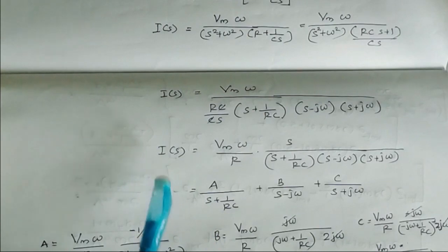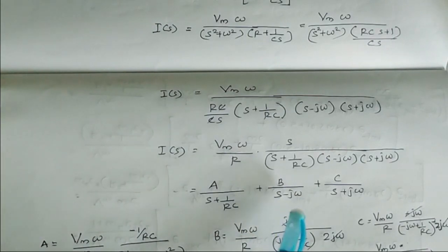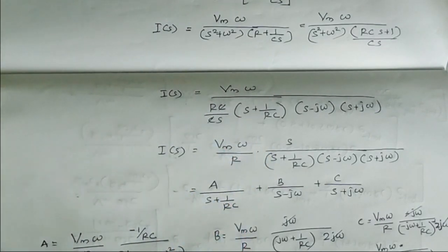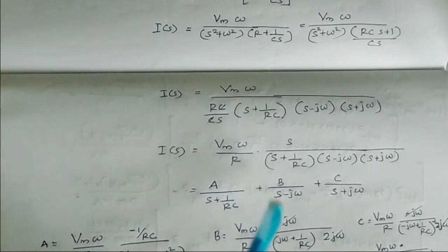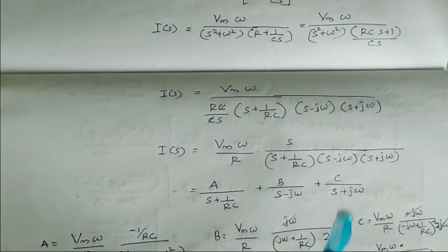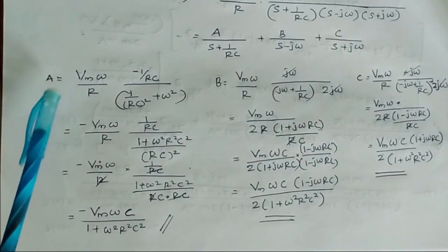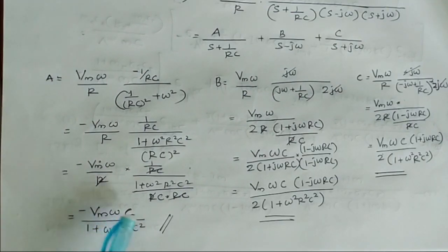We can write I(s) using partial fraction expansion as: I(s) = A/(s + 1/RC) + B/(s − jω) + C/(s + jω). Coefficient A is obtained by multiplying by (s + 1/RC) and setting s = −1/RC. Coefficient B is obtained by multiplying by (s − jω) and setting s = jω. Coefficient C is obtained by multiplying by (s + jω) and setting s = −jω.